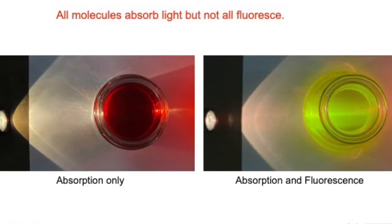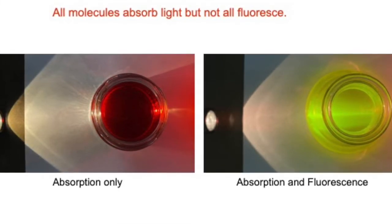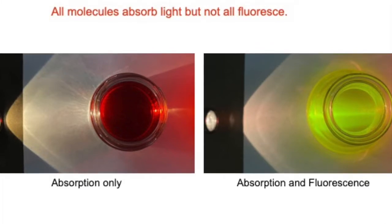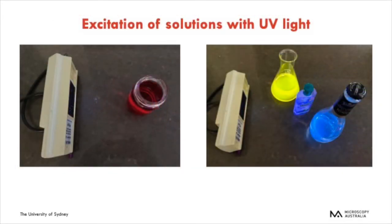The white light from this torch is not particularly strong and contains the full visible spectrum. Now let's investigate what happens when we illuminate these solutions with a strong specific wavelength of light. Here we're exciting the solutions with 366nm light from an ultraviolet lamp. The food colouring seems to just absorb this light, whereas the tonic water and hand sanitiser show a beautiful fluorescence, and there's a lovely yellow fluorescence from the Rhodamine. See if you can identify what molecules in the tonic water and hand sanitiser could be causing this fluorescence.